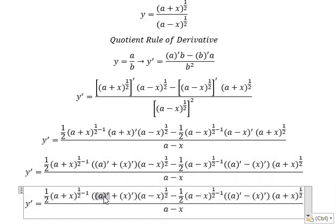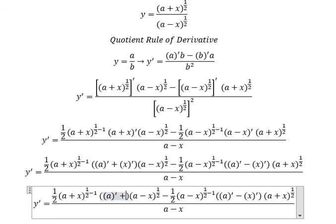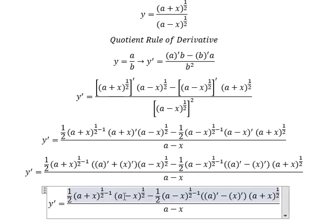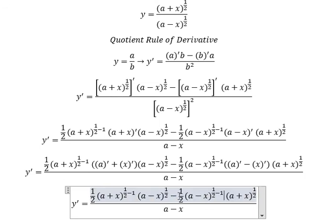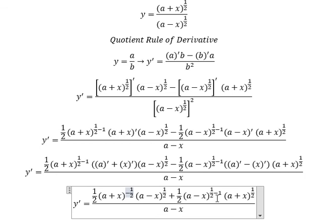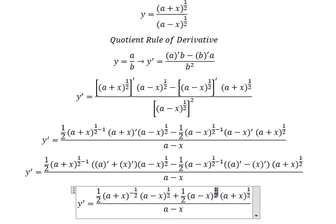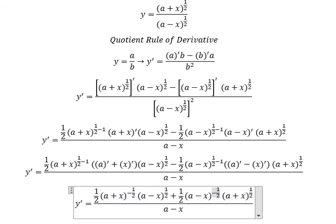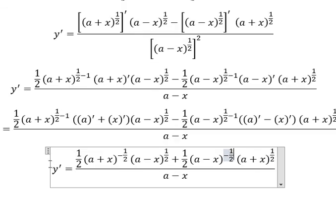This one you get about 0 because this is a constant. This one you get about 1. So we can write like this. This one we have negative 1. So we have negative with negative — you get about positive in here. And this one we have negative 1 over 2. And here is the final answer.